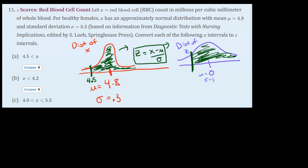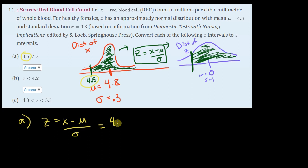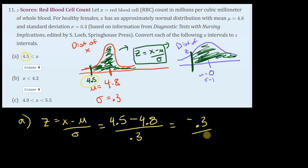The way I'm going to solve this — for part A, I'll use the formula Z equals X minus mu divided by sigma. The value I'm trying to convert is 4.5. So I have 4.5 minus mu, which is 4.8, divided by sigma, which is 0.3. Remember your order of operations — do the subtraction 4.5 minus 4.8, that's negative 0.3 divided by 0.3, and that is negative 1.